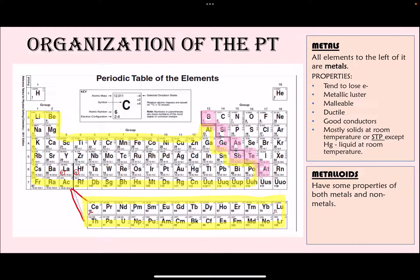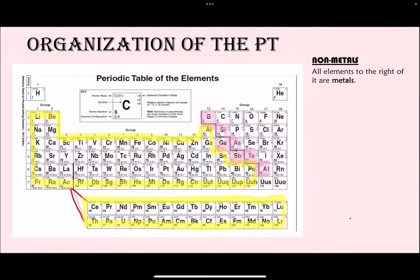For elements next to the staircase, almost all of them are metalloids, but there are two exceptions: aluminum and polonium. Both aluminum and polonium are highlighted as metals because they have metallic properties.